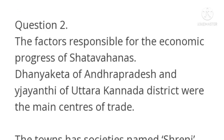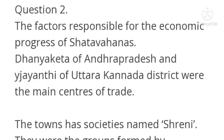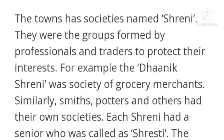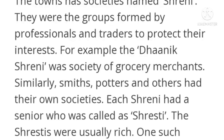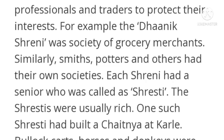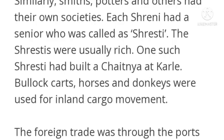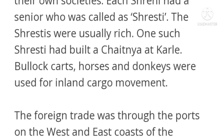Dhanyakata of Andhra Pradesh and Viajanti of Uttara Karnataka were the main centers of trade. The towns had societies named Shrini — groups formed by professionals and traders to protect their interests. For example, Dhanik Shrini was a society of grocery merchants. Similarly, smiths, potters, and others had their own societies. Each Shrini had a senior called Shirishti. The Shirishtis were usually rich.